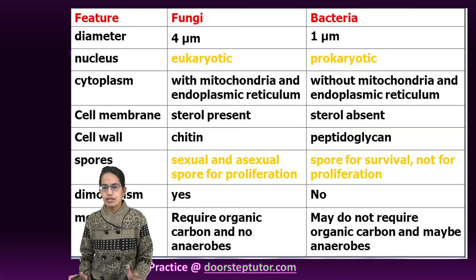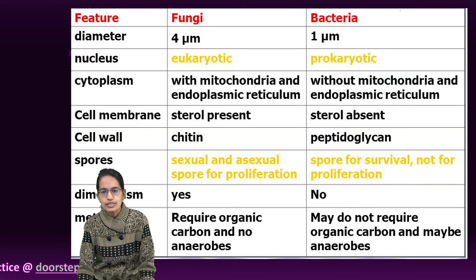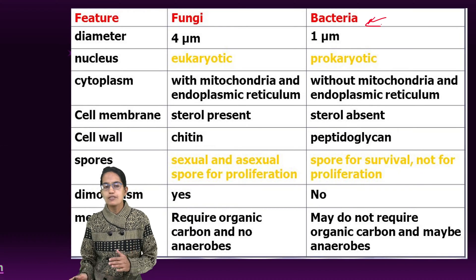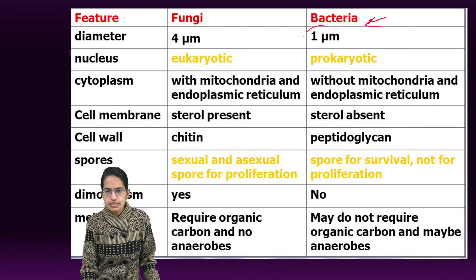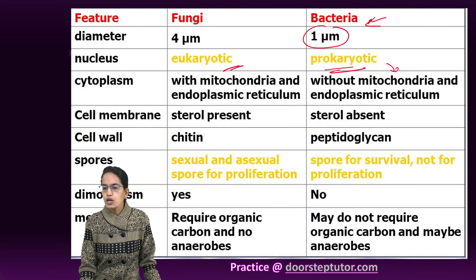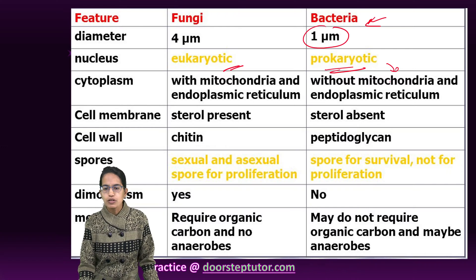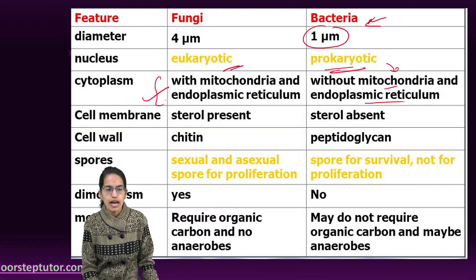Now, a very important difference to understand between bacteria and fungi. Bacteria have a relatively small diameter. Bacteria is a prokaryote; however, fungi is a eukaryote. Bacteria does not have a true nucleus and is without cell organelles — that means without mitochondria and endoplasmic reticulum. But fungi does have those.